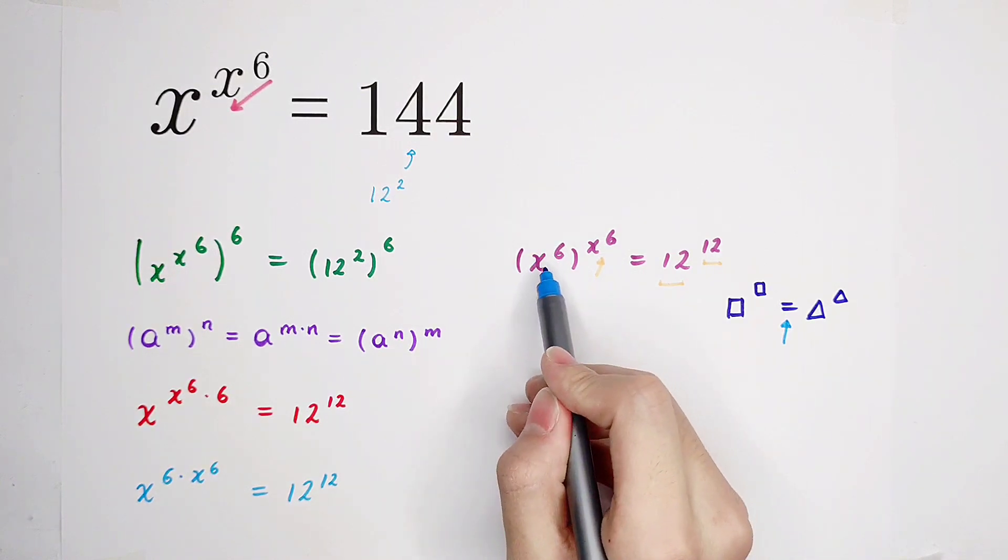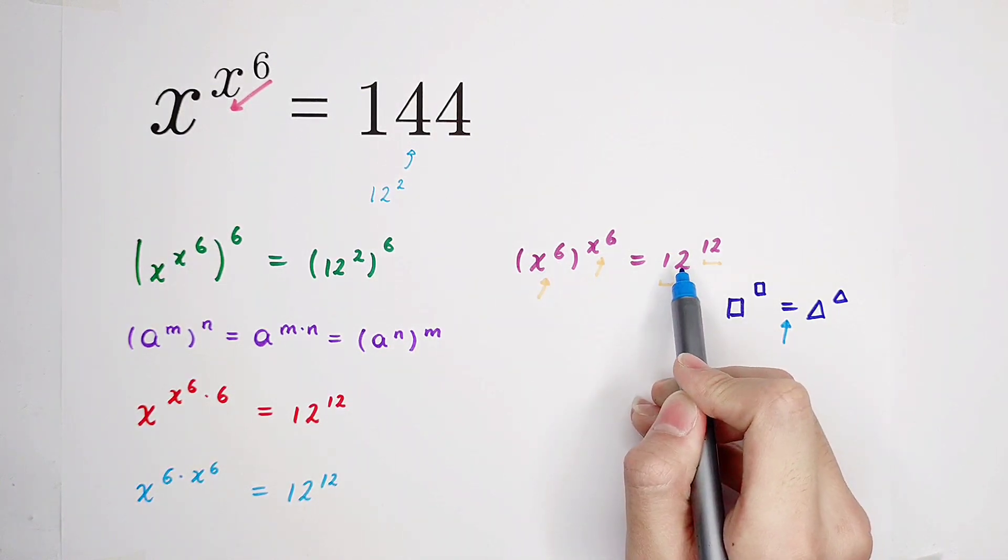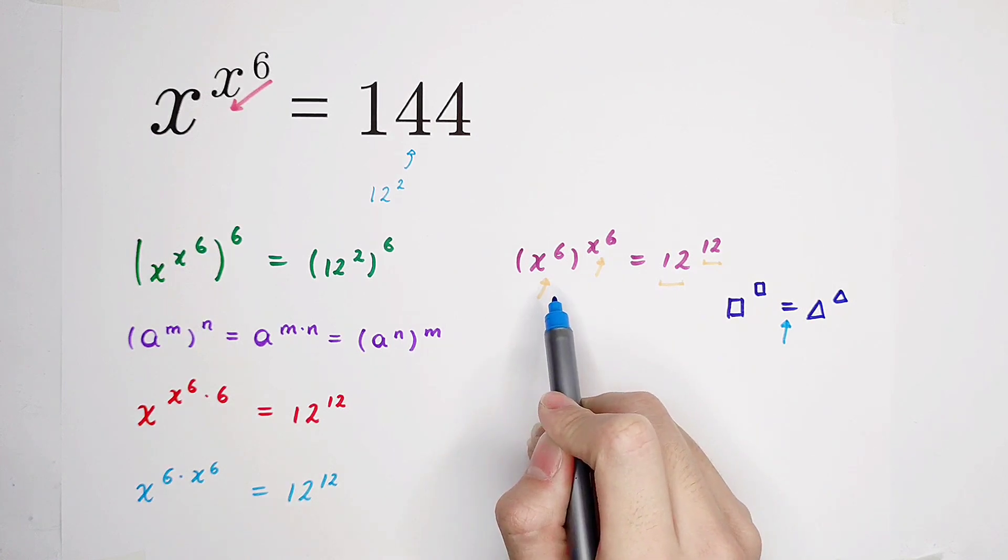It means this one has to be equal to this guy. x to the power of 6 has to be equal to 12.